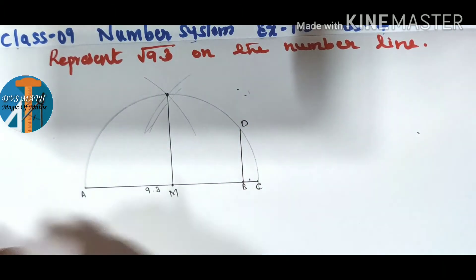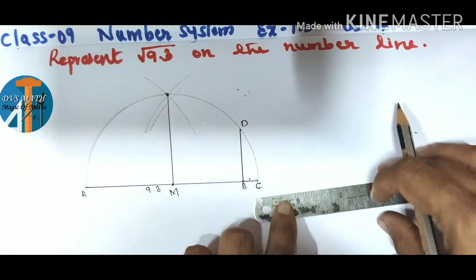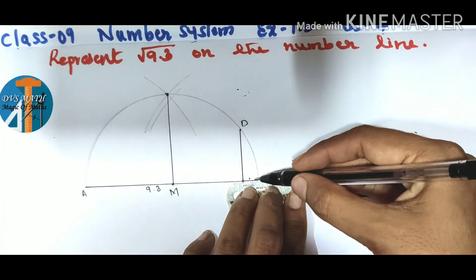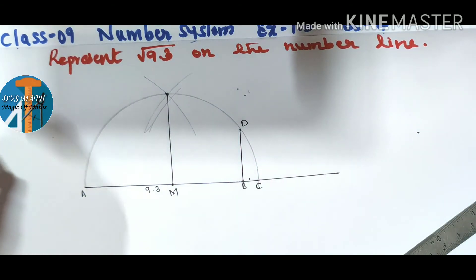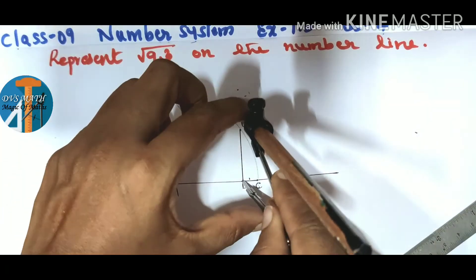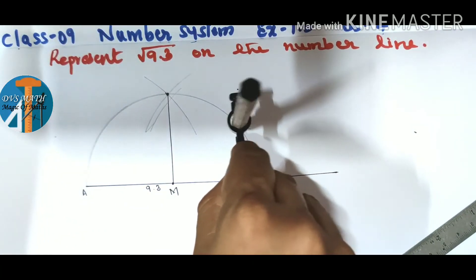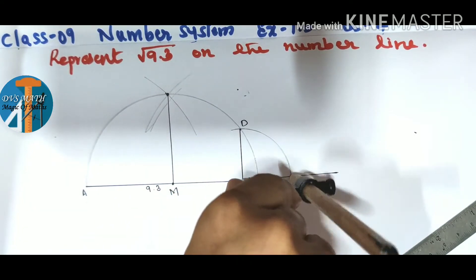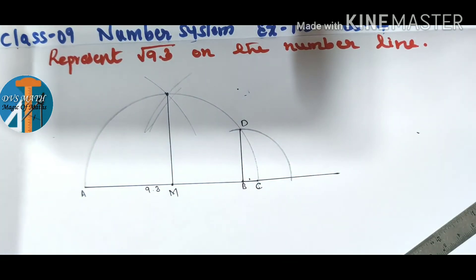Just extend the line a little further. Now using a compass, measure the length BD. From D, cut an arc until it touches the number line.